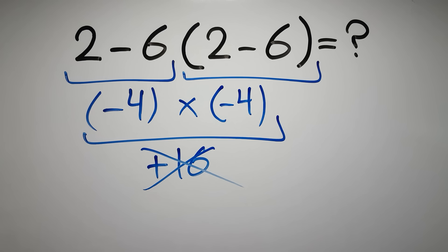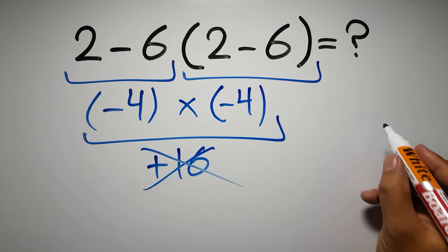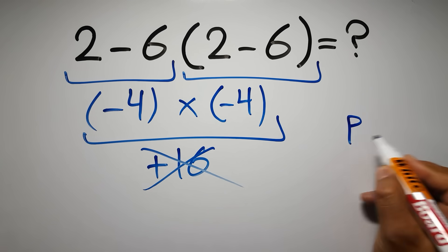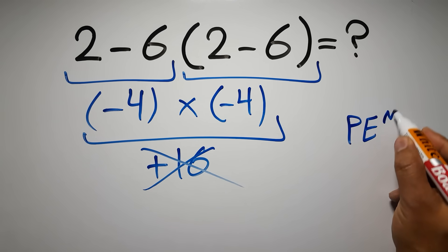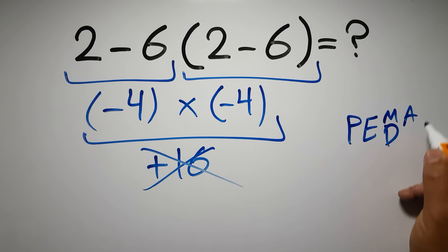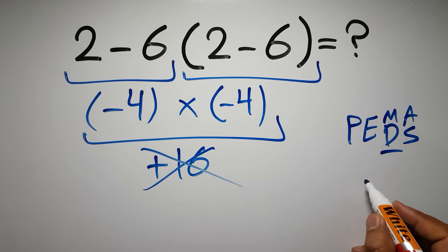But this answer is not correct, because according to the order of operations, first we have to do parentheses, then exponents, then multiplication or division, and finally addition or subtraction. Remember that multiplication and division have equal priority, and we have to work from left to right, and the same applies to addition and subtraction.